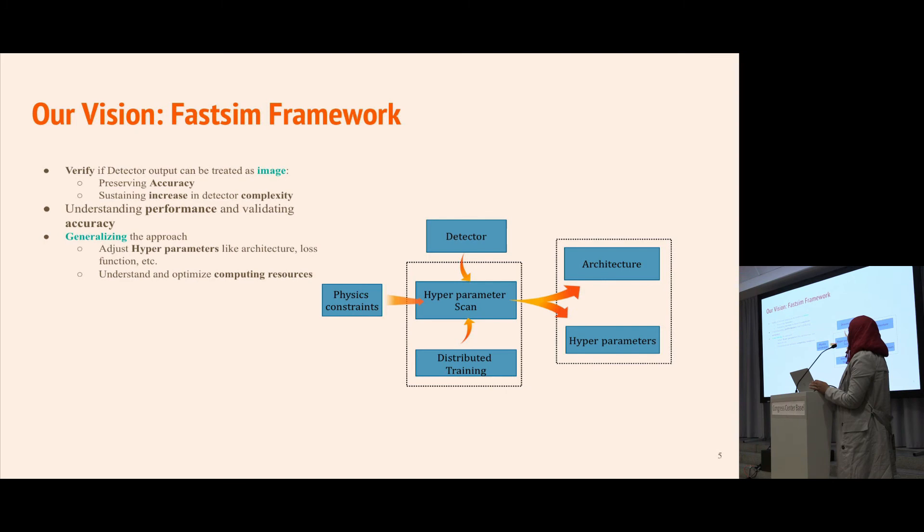Our vision for a fast simulation network was to take data for any detector with physics constraints and automatically get the best architecture and hyper parameters according to a hyperparameter scan. To run this scan in an acceptable amount of time, we need distributed training.